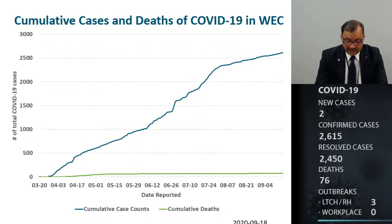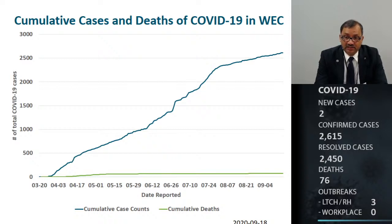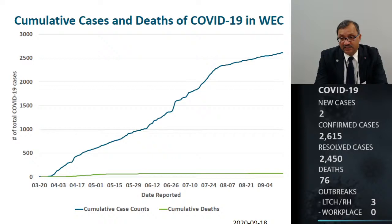Looking at the cumulative cases and deaths since the first case was reported in Windsor-Essex, new cases have remained low, leading to a generalized stabilization of COVID-19 cases. The easiest way to interpret this graph: if the curve is steep, that means there are a high number of cases in a short period of time; when the curve is flat, the number of new cases is relatively low. The number of deaths is relatively stable, with most deaths reported in the elderly population.